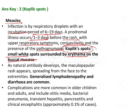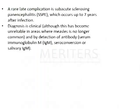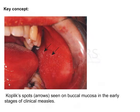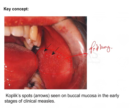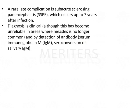There will also be generalized lymphadenopathy and diarrhea as common symptoms, along with hyperplasia of lymphoid tissue. The grayish papules surrounded by erythema give a peppery appearance to the buccal mucosa, and are generally seen opposite the first or second molars — more commonly the mandibular molars.